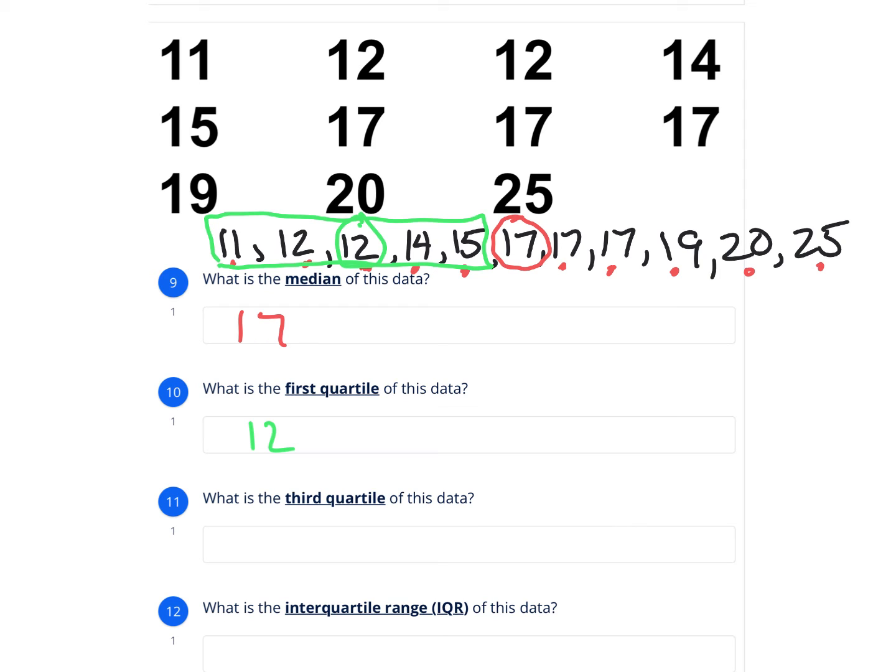If I want to find the third quartile, I'm going to do the same thing with the numbers after that 17. And I find the number in the middle, and that looks like it's 19. That's called my third quartile.